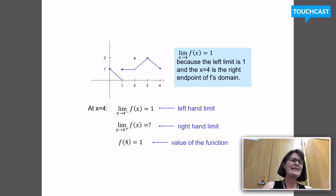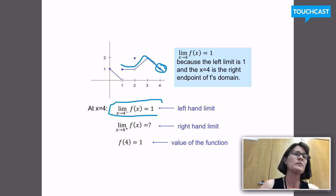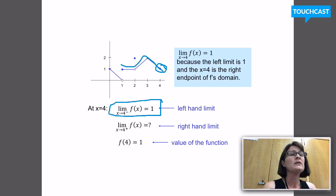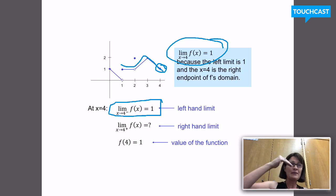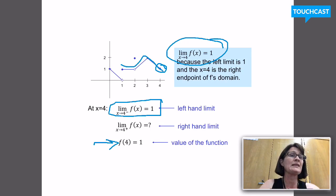We have something similar at x equals 4. We can talk about the limit as x approaches 4 from the left — I'm approaching this place where the y value is 1. So the limit as x approaches 4 from the left is 1. To talk about approaching x equals 4 from the right doesn't make sense because there aren't any numbers in the domain to the right of 4. So I would still say that the limit of f of x as x approaches 4 is 1, because the limit was 1 for every part of the domain that was part of the function. And as a side note, f of 4 equals 1, but again, not related to the question of what the limit is.